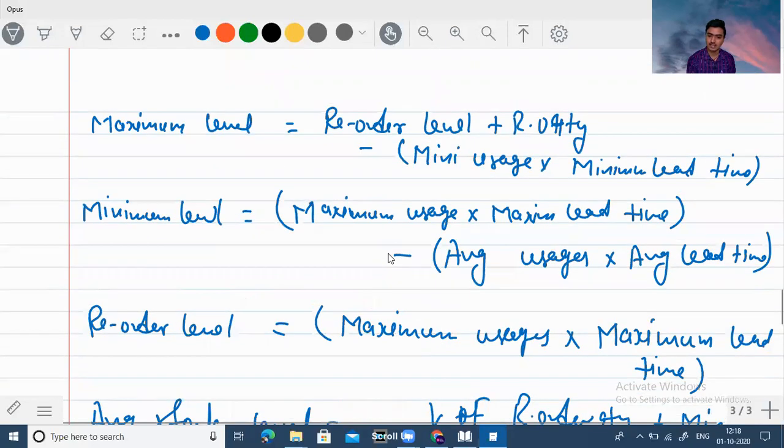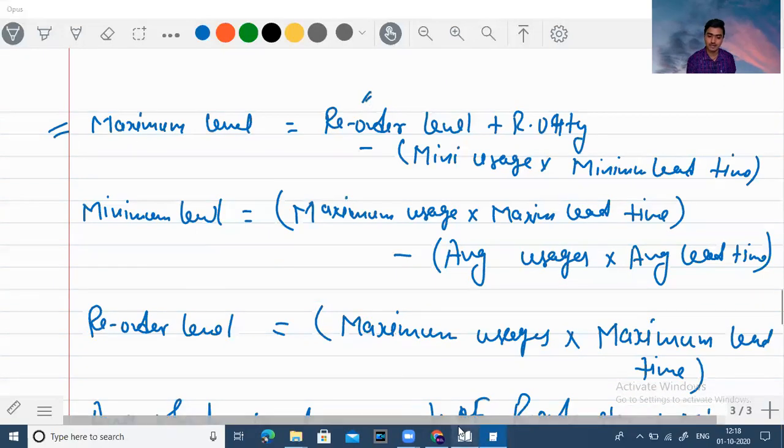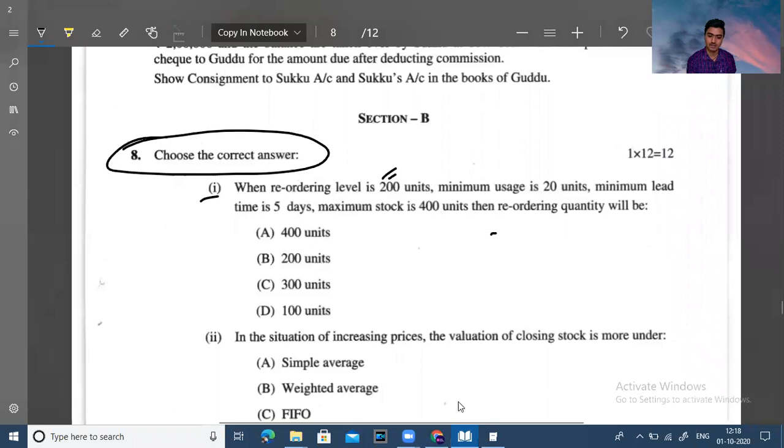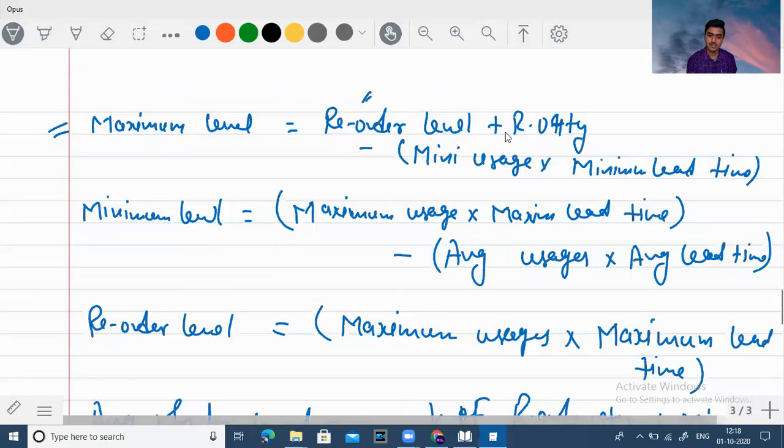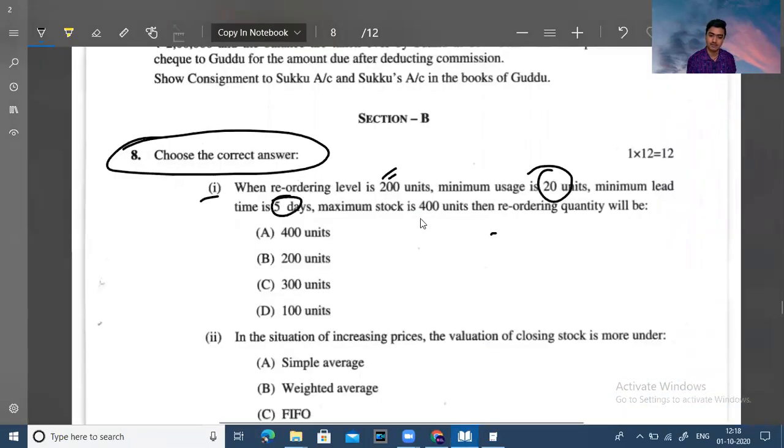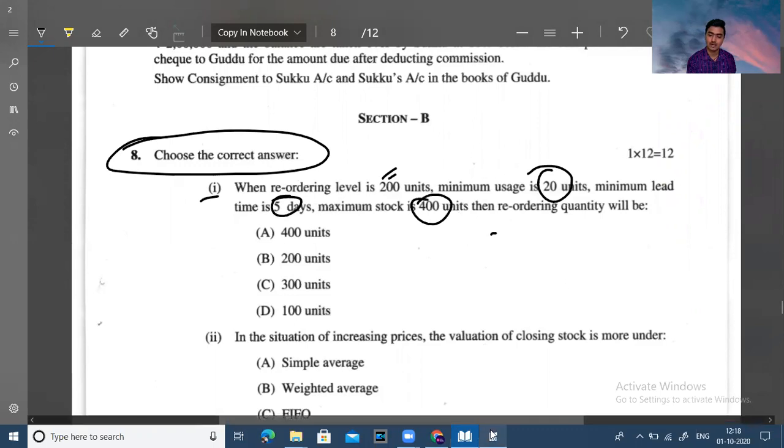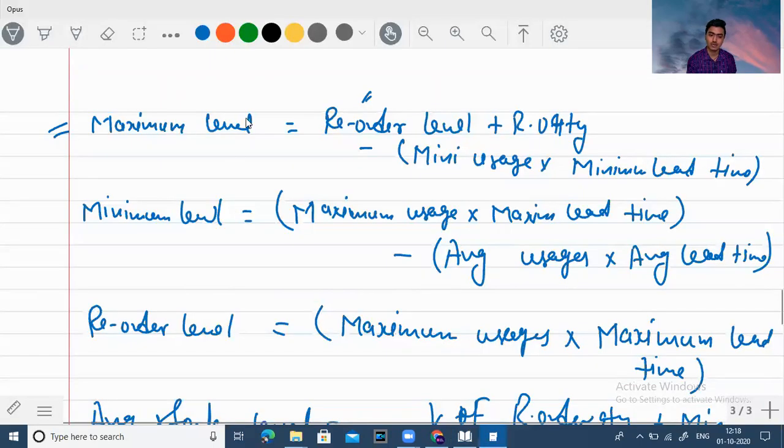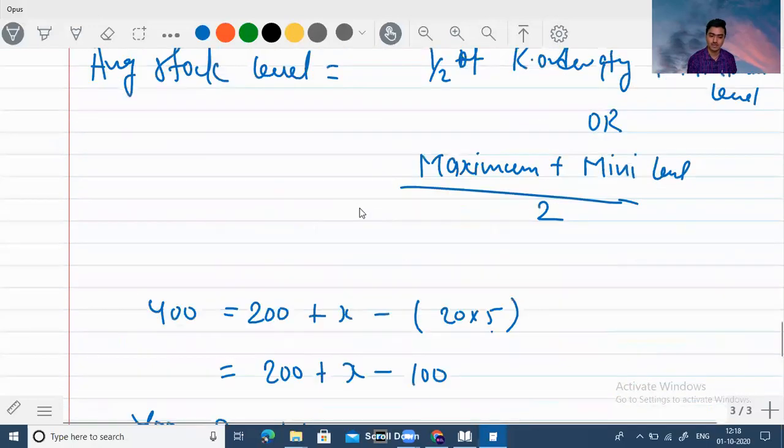Now what you have given in the question is that they have asked to calculate the reorder quantity, so we will use this formula because you can see the reorder level we have given, the reorder level. Second, the reorder quantity is not given, but the minimum usage and minimum time is given. If we go to this formula, we have a missing figure which we have to calculate.